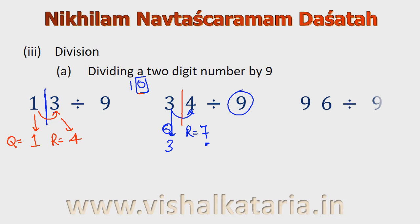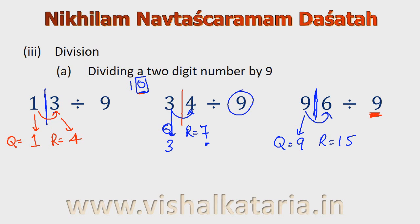Next example: 96 divided by 9. Again, base is 10, so I will put a bar after the units place. Now the quotient will be equal to 9 and the remainder will be 9 plus 6 which is 15. But we know remainder can't be greater than 9. So I will subtract 9 from the remainder and add 1 to the quotient. Our quotient will be equal to 10 and the remainder will be equal to 6.